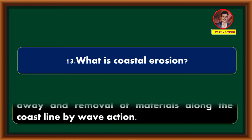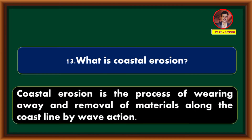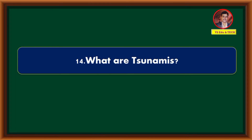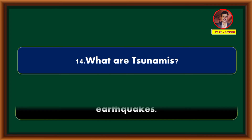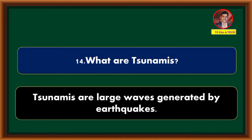What is coastal erosion? Coastal erosion is the process of wearing away and removal of materials along the coastline by wave action. What are tsunamis? Tsunamis are large waves generated by earthquakes.